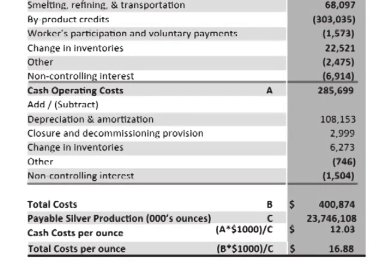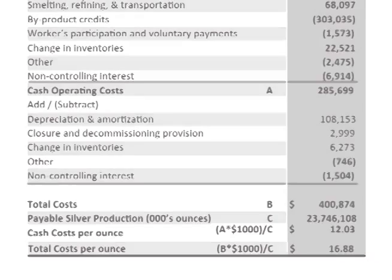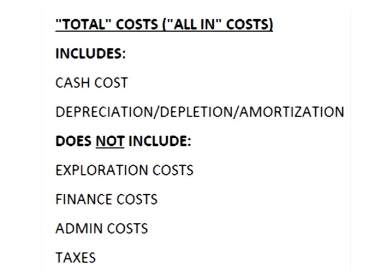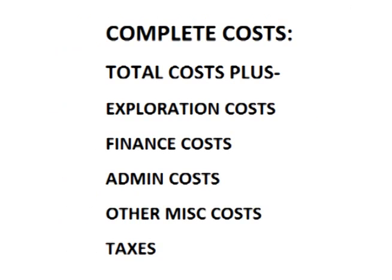Pan Am's total cost in 2012 was $16.88 per ounce, which includes cash cost plus depreciation, depletion, and amortization costs.